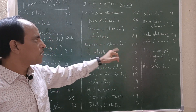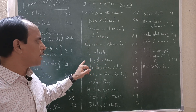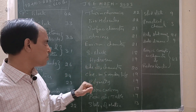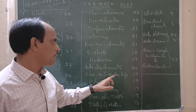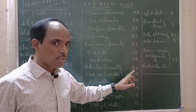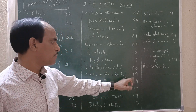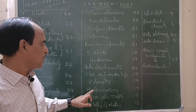Amines: 21. Environmental chemistry: 21. Hydrogen: 19. Electrochemistry: 20. Chemistry in everyday life: 19. Polymers: 19.